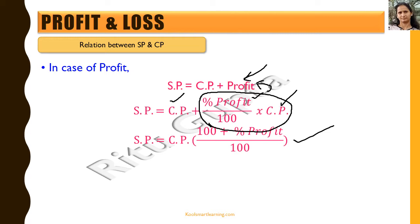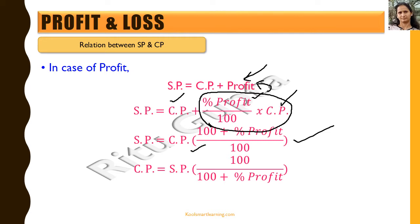So this is the relation between selling price and cost price. If we want to find cost price in terms of selling price, we rearrange to get: CP = SP × 100 / (100 + Profit%).